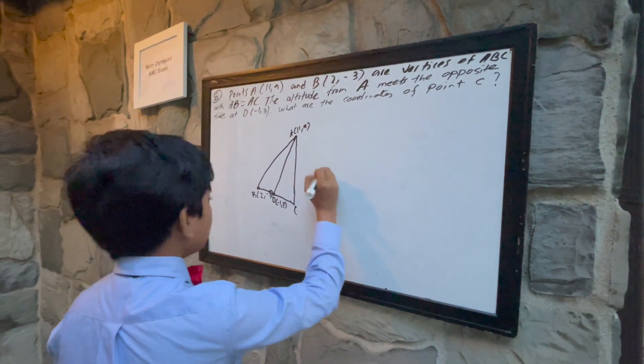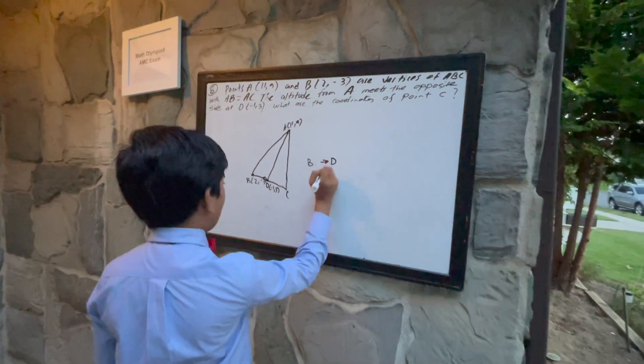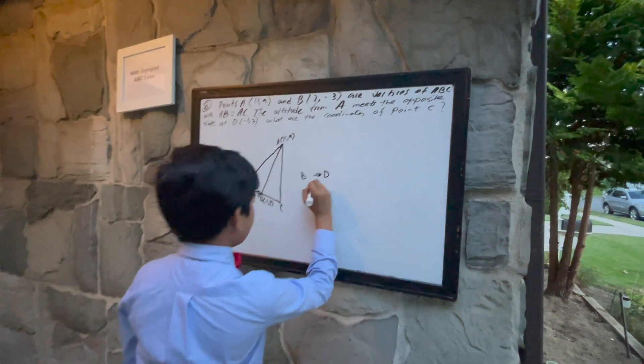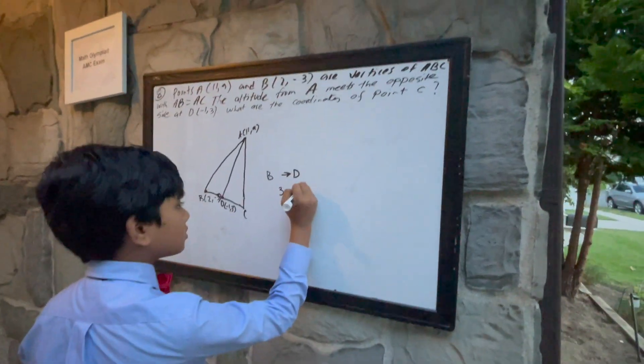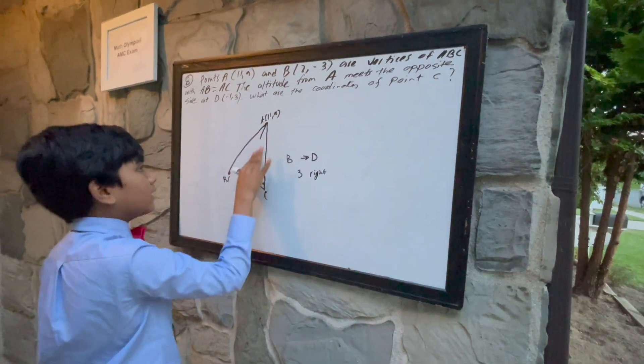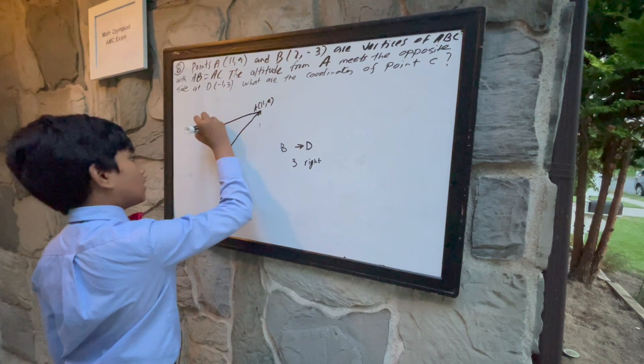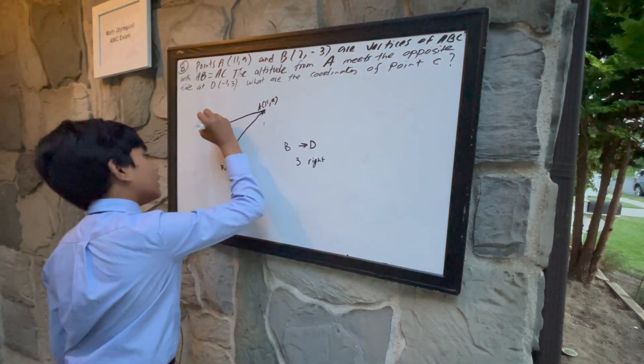So to get from B to D, you have to go 3 to the right. Actually, it doesn't look like this, but rather it looks more like this.